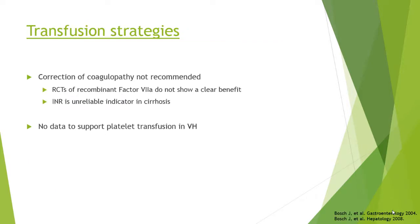Correction of coagulopathy has not shown benefit for achieving hemostasis in variceal hemorrhage, reducing re-bleeding, or short-term mortality. Two small randomized controlled trials looking at recombinant factor VIIa did not show clear benefit. INR is an unreliable indicator in cirrhosis — it's thought to be a pro-coagulant state overall. There is also no data to support platelet transfusion in variceal hemorrhage.